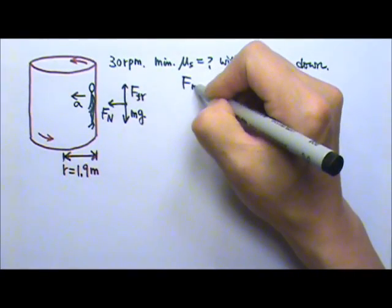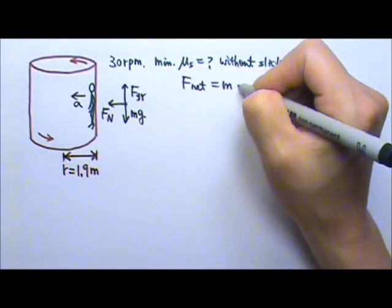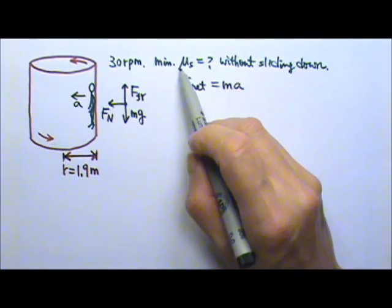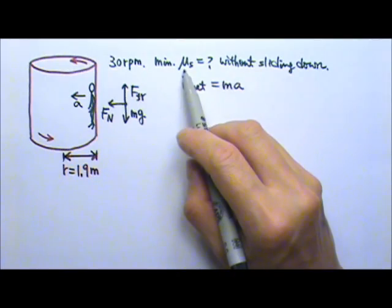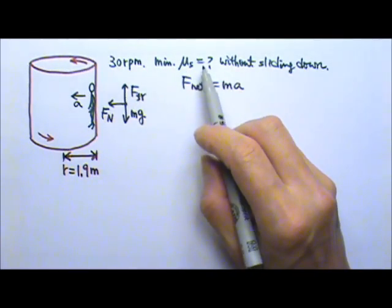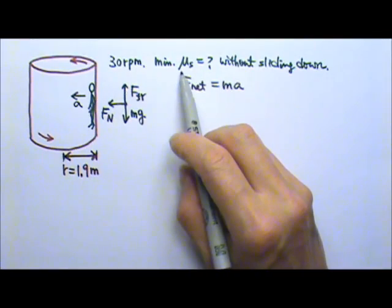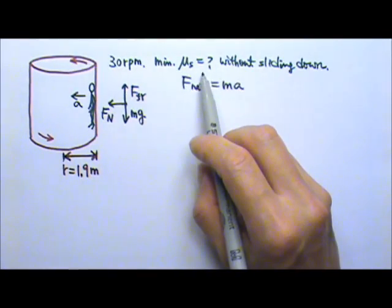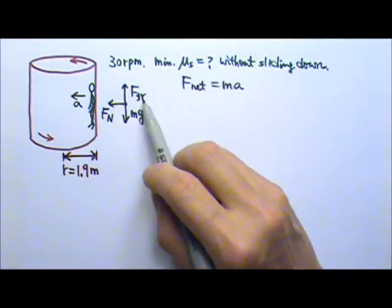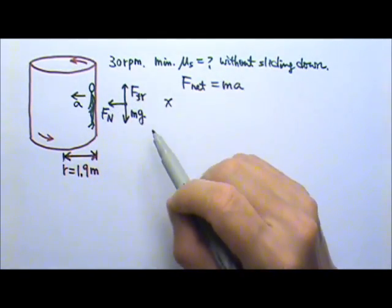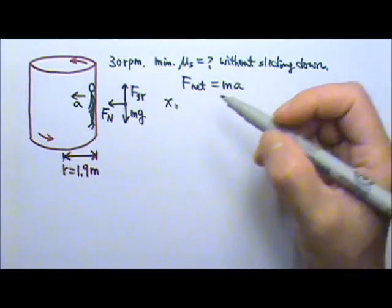Now we can write the net force equals to Ma. We want to find the mu_s. The only equation that involves mu_s is the friction equals to mu_s times normal force. So in order to find the mu_s, we will need both the normal force and the friction. That means we need both the x and the y directions. So let's start with the x direction.